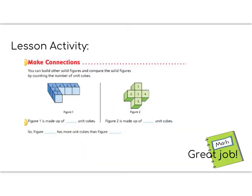Alright, 5th graders, time for the lesson activity. It says, make connections. You can build a solid figure and compare the solid figures by counting the unit cubes in a solid figure. So, let's look at the first unit cube, the first figure. It says, if we count, we have 1, 2, 3, 4, 5, 6 unit cubes. So, figure 1 is made up of 6 unit cubes. And then if we look at the shape on the right, figure 2, we have 1, 2, 3, 4, 5 unit cubes. So, that means that we can compare them.